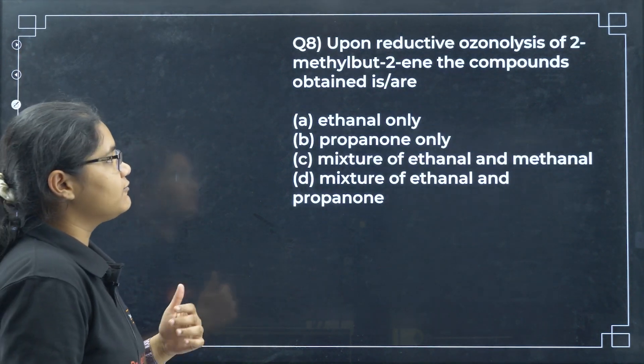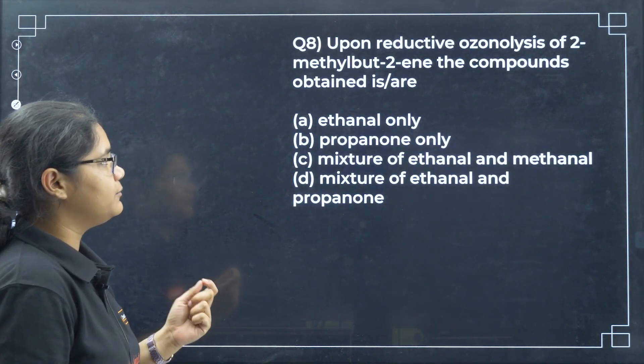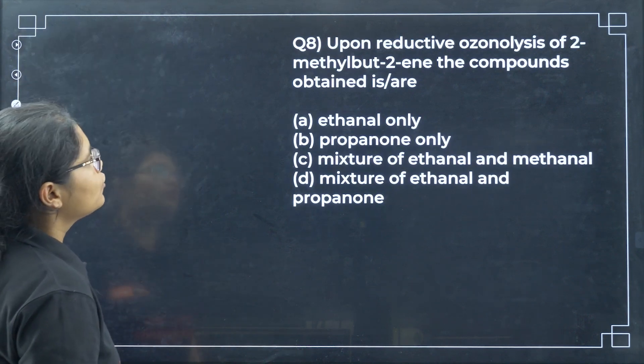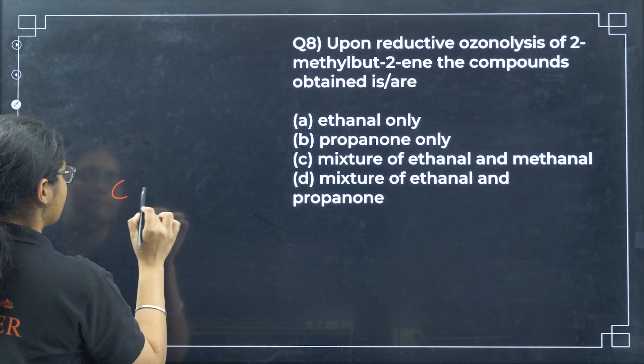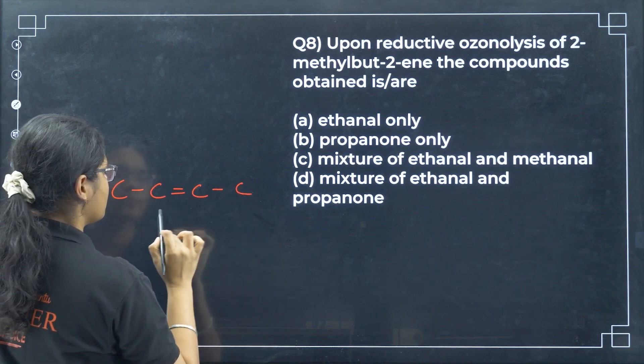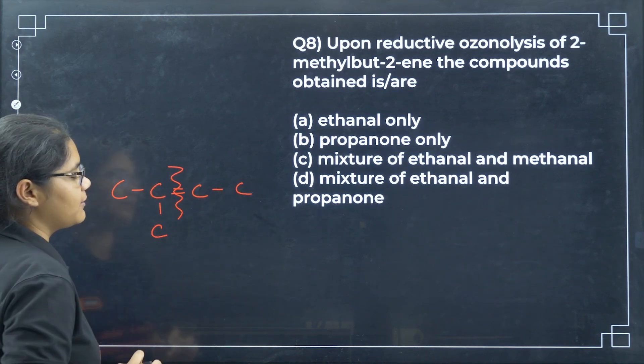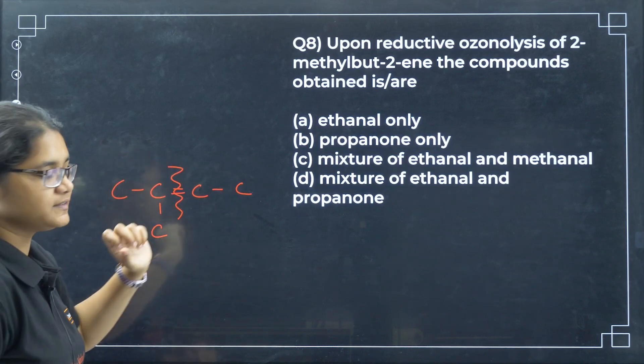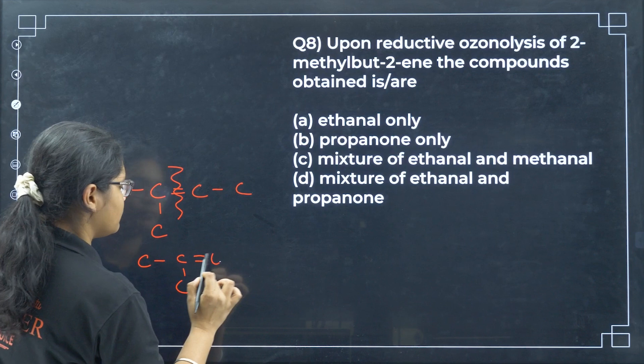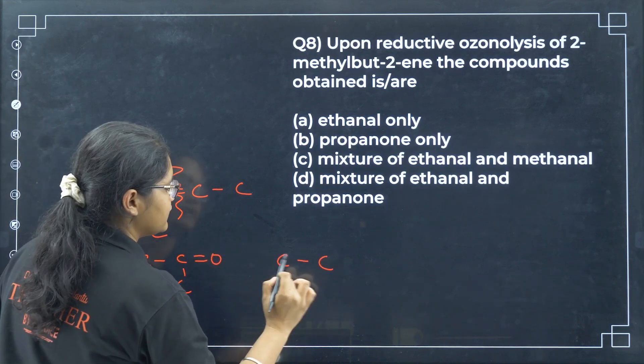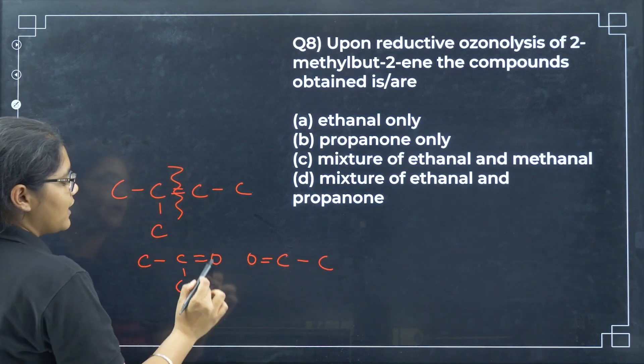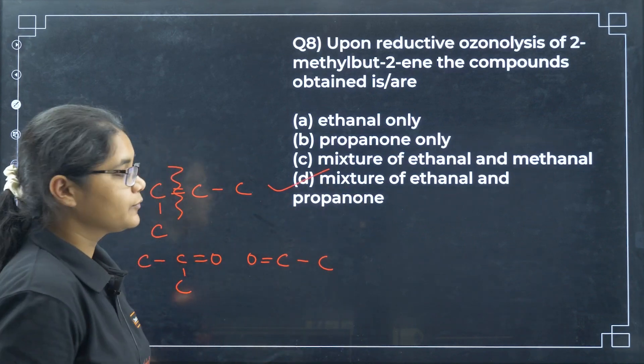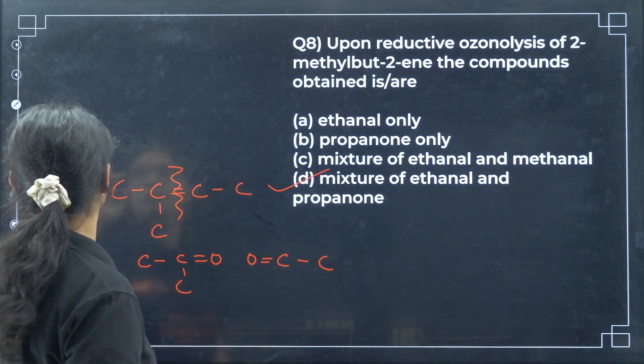Next, assertion-reason question: carbonyl compounds undergo nucleophilic addition reaction. Like alkene, is the C=O double bond nucleophilic? No. C=O has electrophilic carbon. This carbon is electrophilic in nature. So the assertion is definitely correct but reason is not true. Option C here.